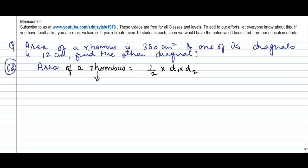Now we are given the left hand side because we know that the area is 360 is equal to one half into d1. What is the length of the first diagonal? 12 centimeter into d2. d2 is something which we don't know.